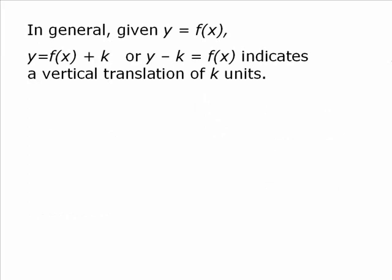But here's the statement that sums it up. In general, given y = f(x), y = f(x) + k or y - k = f(x) indicates a vertical translation of exactly k units. So if you have the y isolated, then the k is honest. If it's a positive number, it goes up.